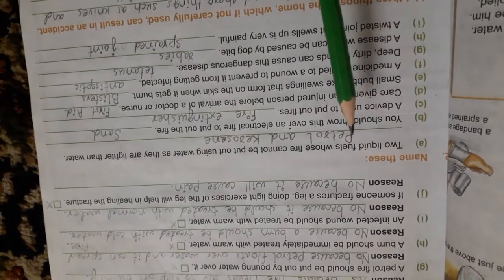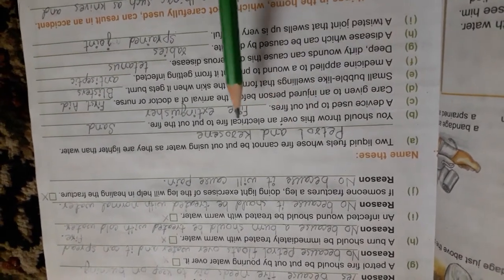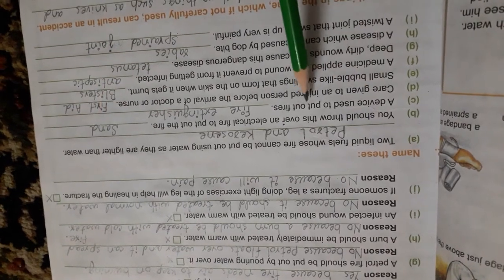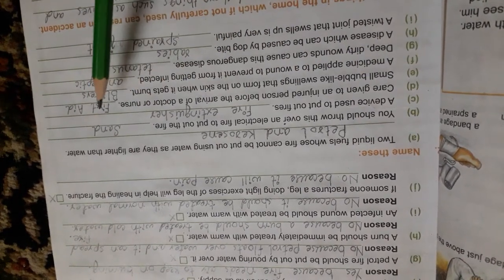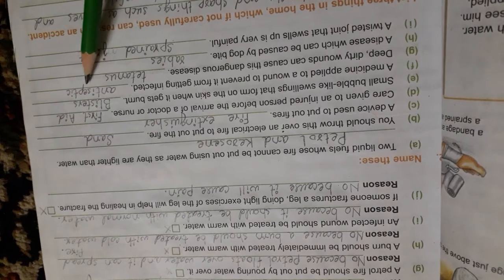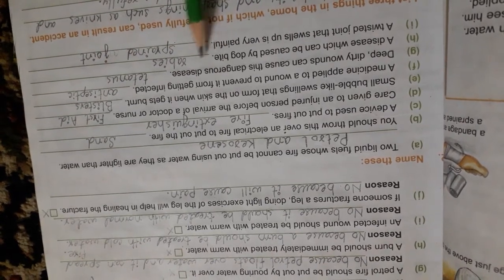Question number 2. Name these two liquid fuels whose fire cannot be put out using water as they are lighter than water. Petrol and kerosene. You should throw this over an electrical fire to put out the fire. Sand. A device used to put out fire. Fire extinguisher. Care given to an injured person before the arrival of a doctor or nurse. First aid. Small bubble like swelling that forms on the skin when it gets burnt. Blisters. A medicine applied to a wound to prevent it from getting infected. Antiseptic. Deep dirty wounds can cause this dangerous disease. Tetanus. A disease which can be caused by dog bite. Rabies. A twisted joint that swells up is very painful. Sprained joint. These are all the things that you have read in the lesson.